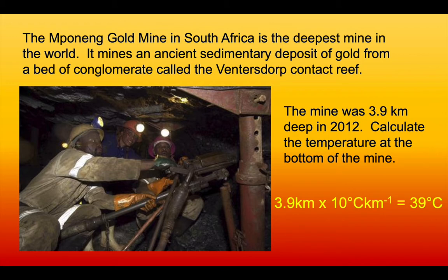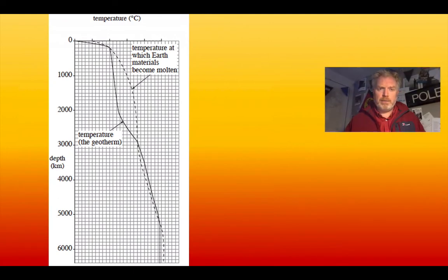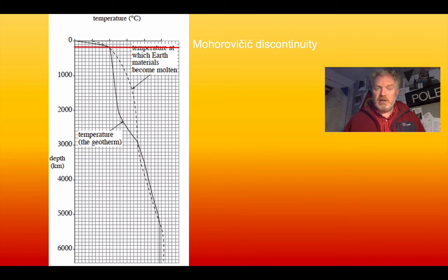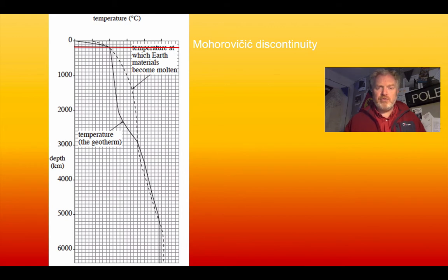We can see the significance of this geothermal gradient close to the surface, but there's another wider significance if we look at depth. This geothermal gradient tells us a lot about the internal structure of the Earth. We can see a few key points where the two curves on the graph actually meet — the solid line is the Earth's temperature and the dashed line is the melting temperature. They come together at about 200 kilometres down, creating what we call the Mohorovicic discontinuity — the Moho — the boundary between crust and mantle.